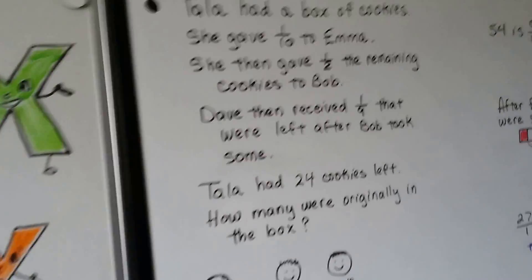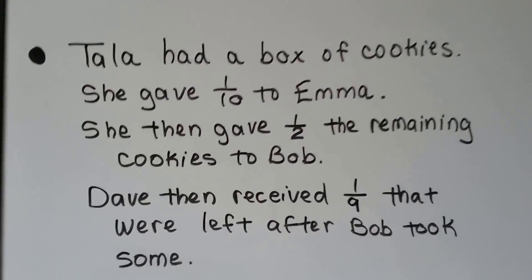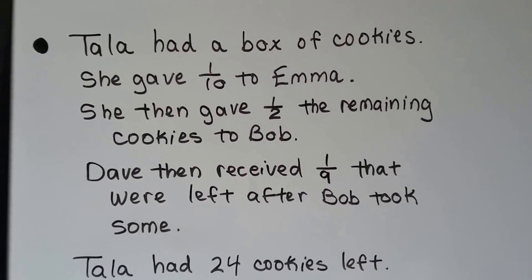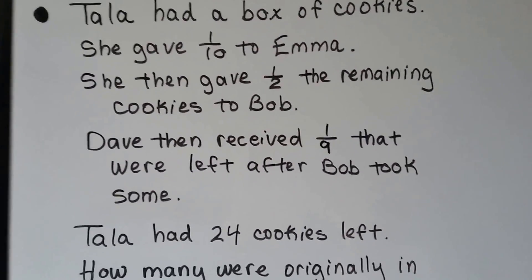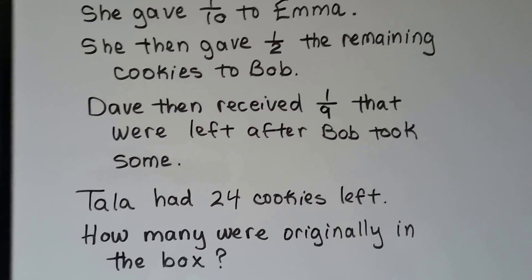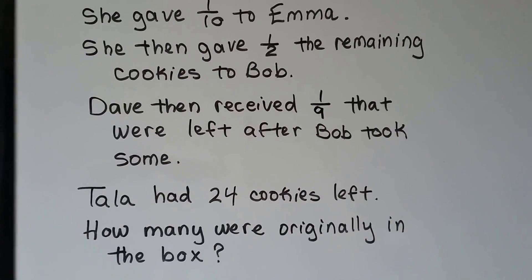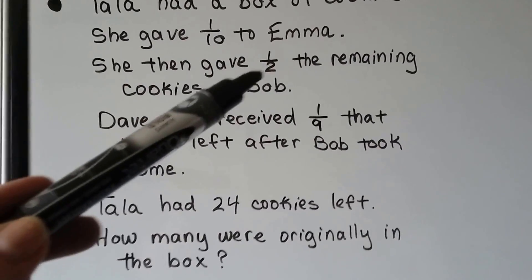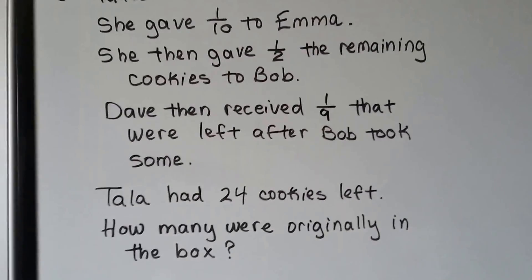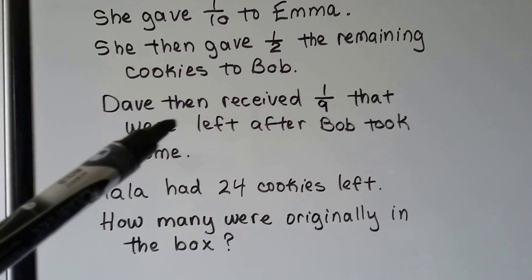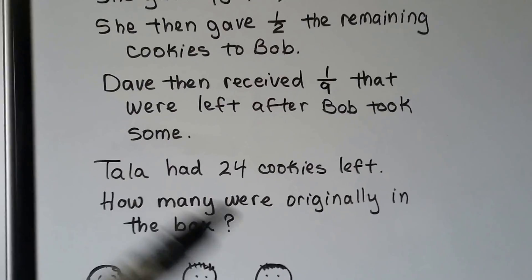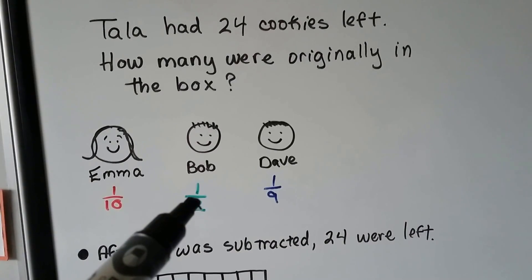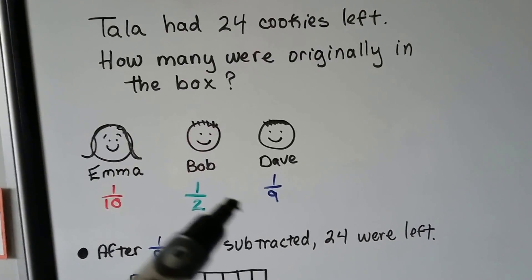So let me show you this word problem. Tala had a box of cookies. She gave one-tenth to Emma, then she gave half the remaining cookies to Bob. Dave then received one-ninth of those left after Bob took some. Tala had twenty-four cookies left. So how many were originally in the box? Now this one is the second type. After Emma took hers, she gave half the remaining cookies to Bob. Then Dave got one-ninth after Bob, and then she had twenty-four left. So Emma got a tenth, Bob has half of what was left after that, and Dave has one-ninth of what was left after Bob.